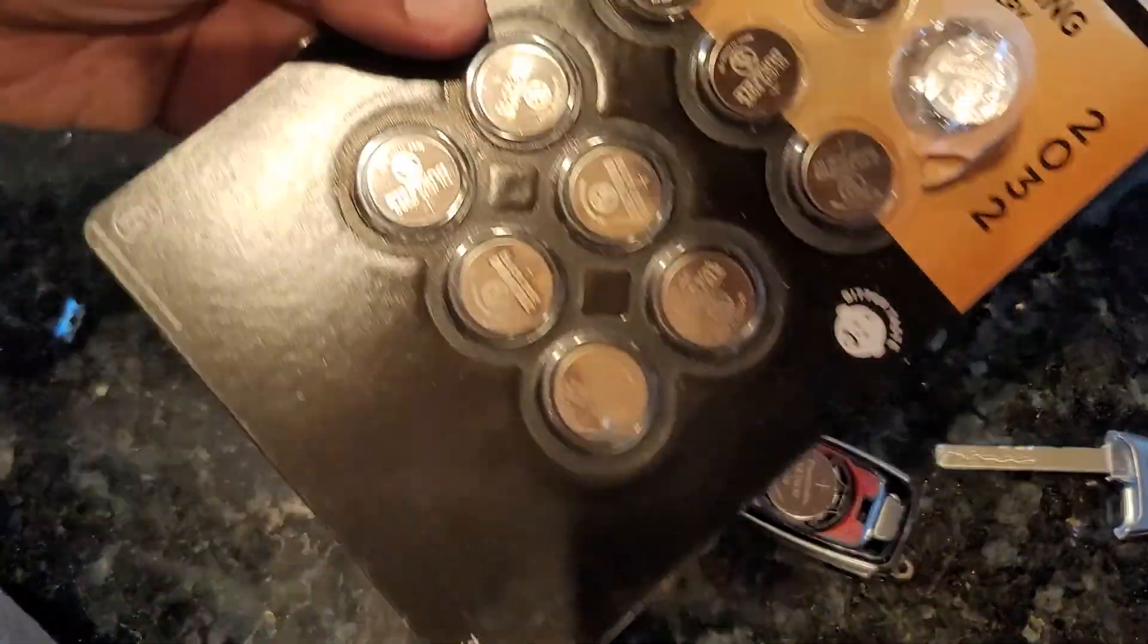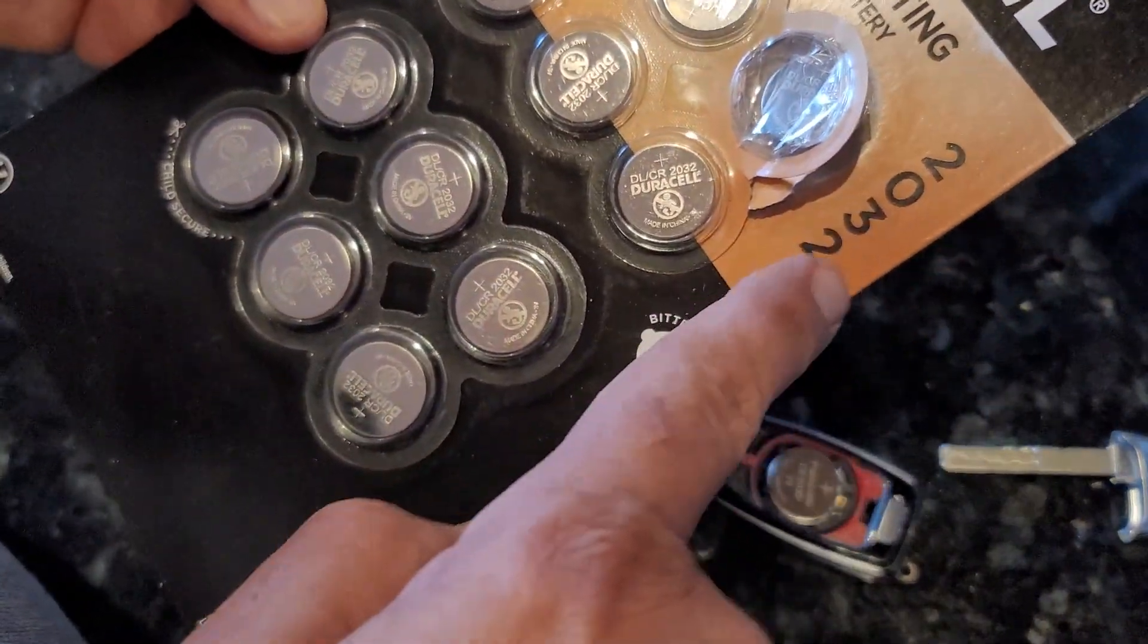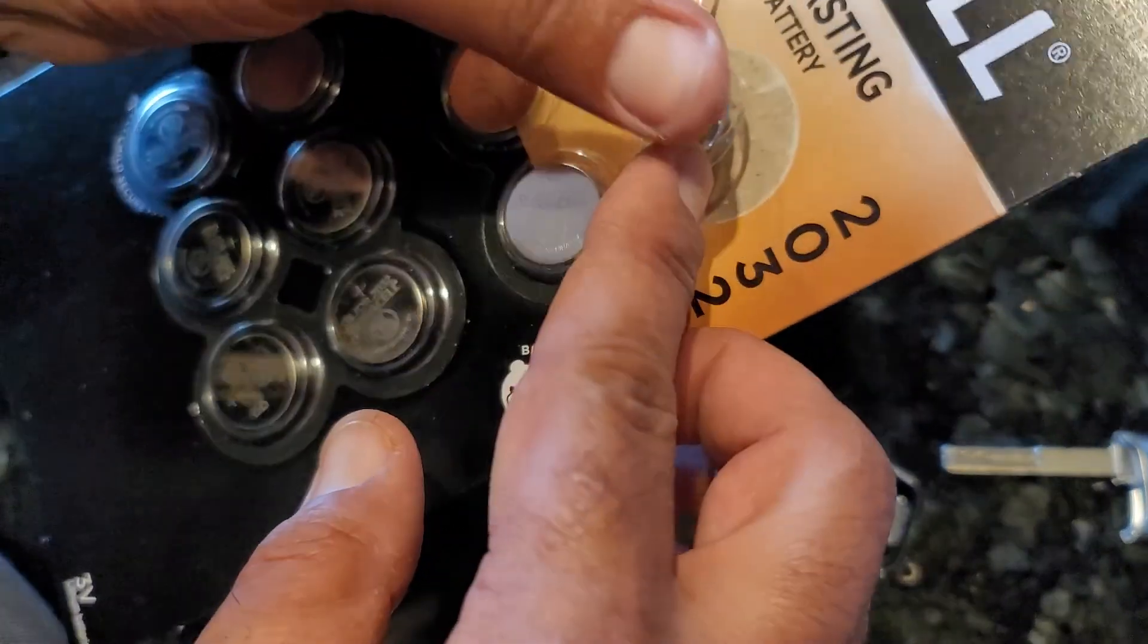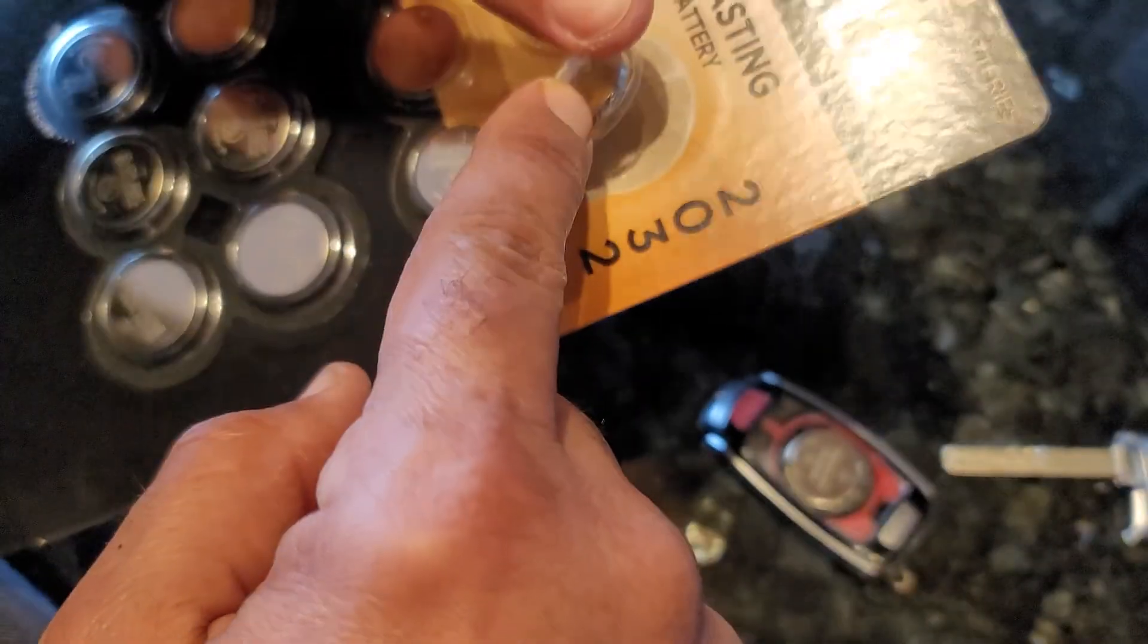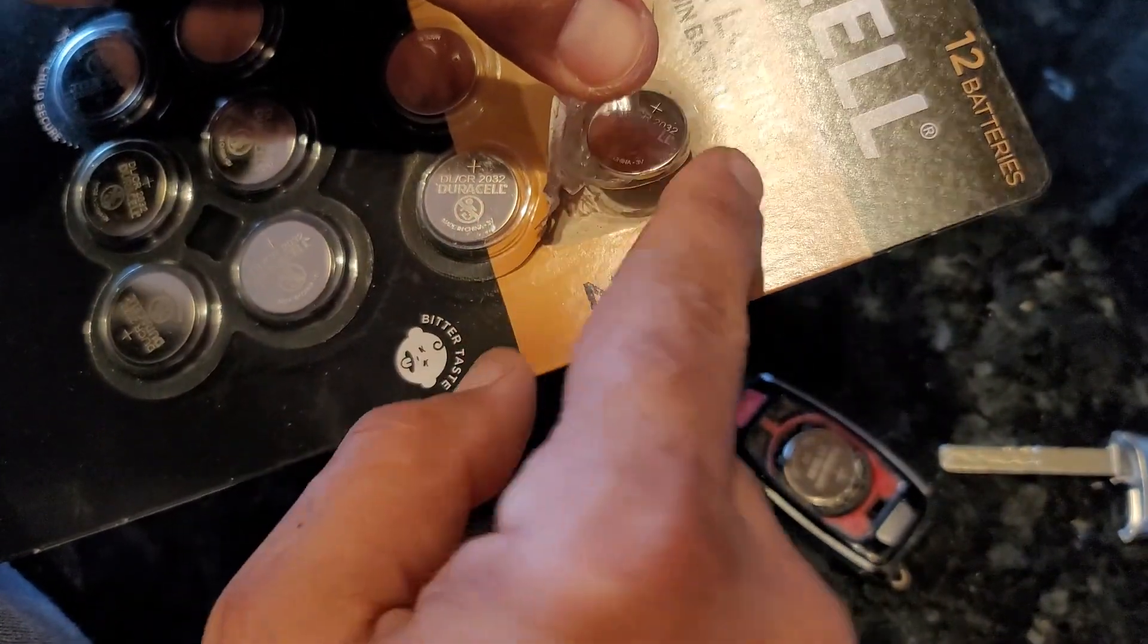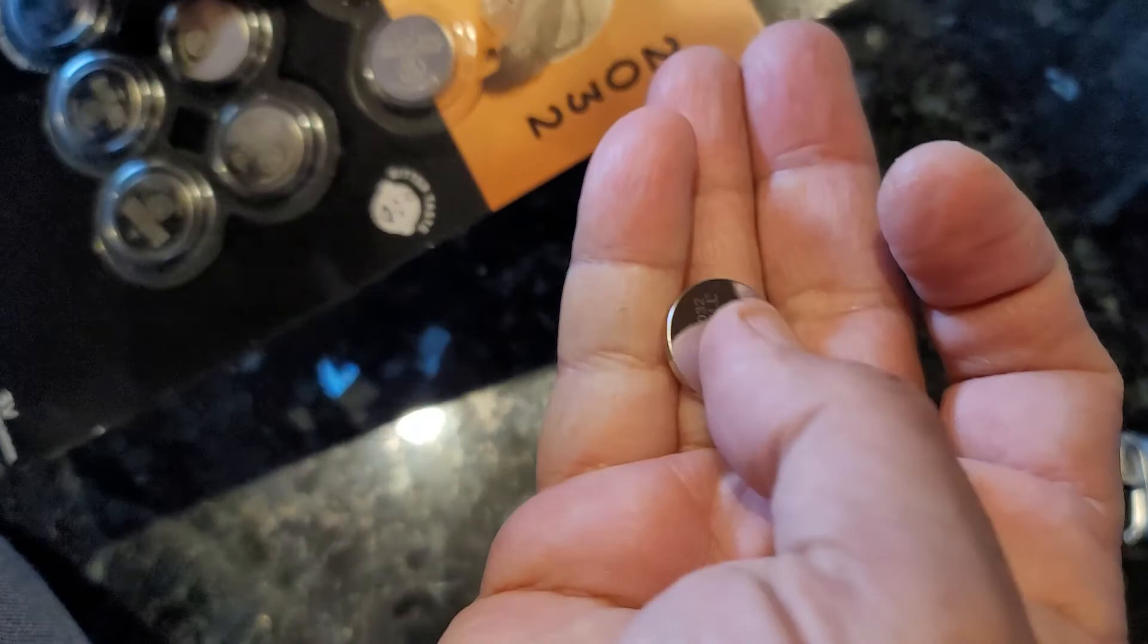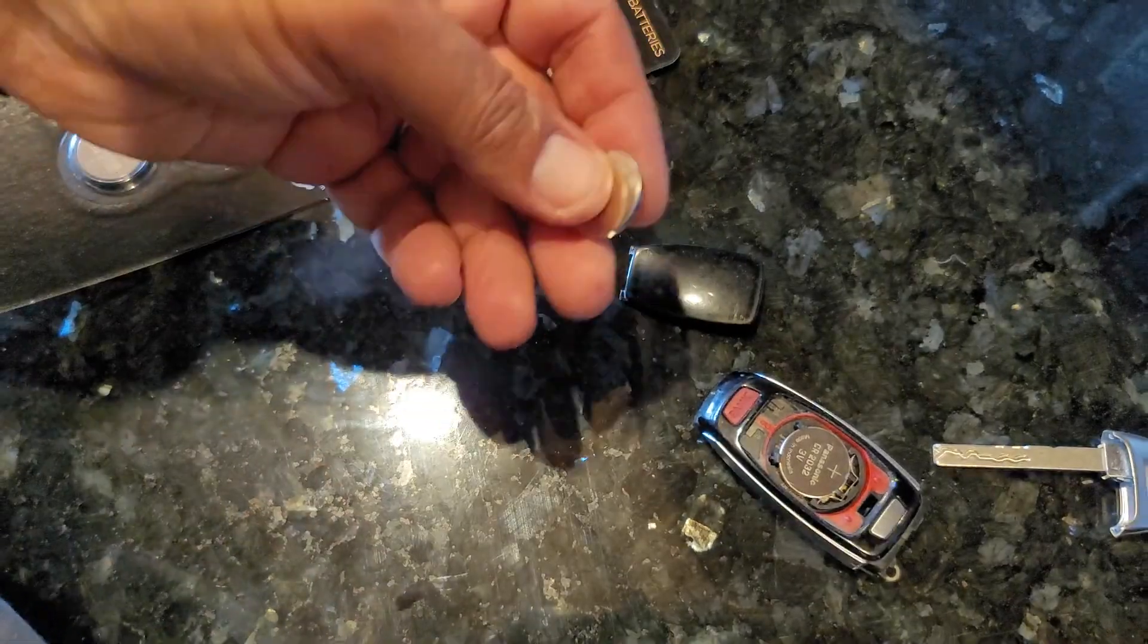And luckily, Costco is selling these 2032s, which is what you need. And believe it or not, changing the battery in here is easier than taking out this battery from the case. They've got two membranes, if you don't know, and it takes a little bit of cutting or whatever to get that out.